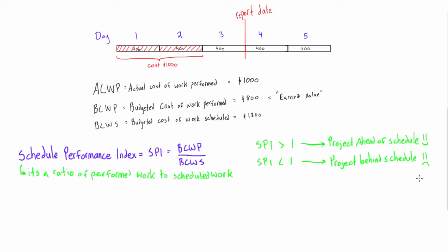The other way to tell if our project is ahead of schedule or behind schedule is by using the schedule variance. It's the difference between budgeted work hours and scheduled work hours. If schedule variance is positive, the project is ahead of schedule, and if schedule variance is negative, the project is behind schedule.